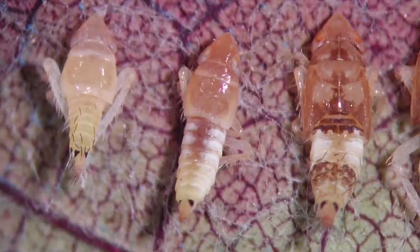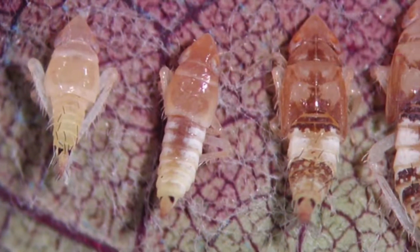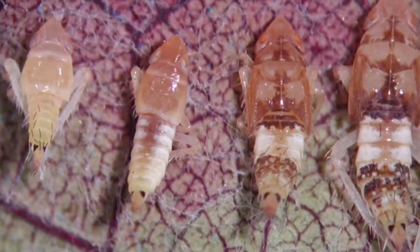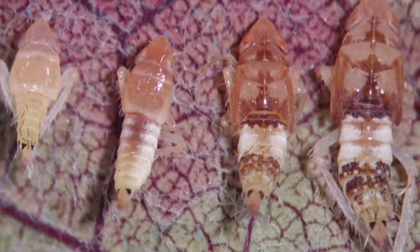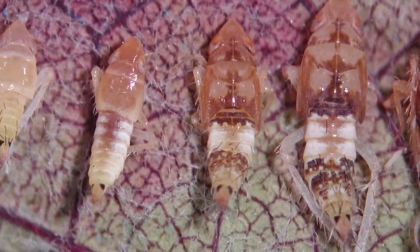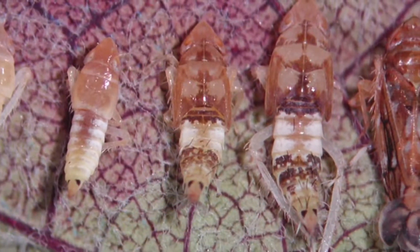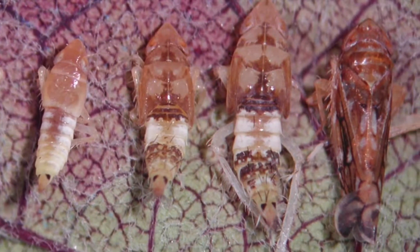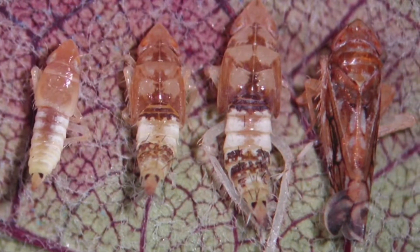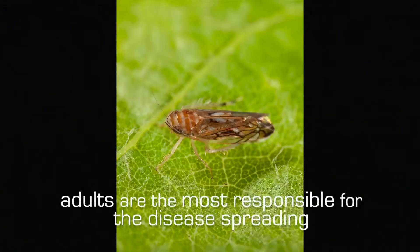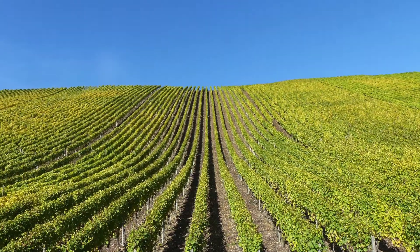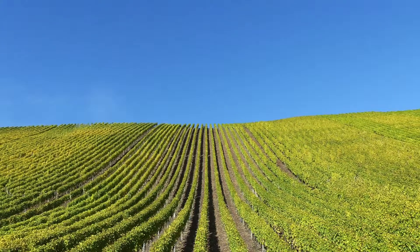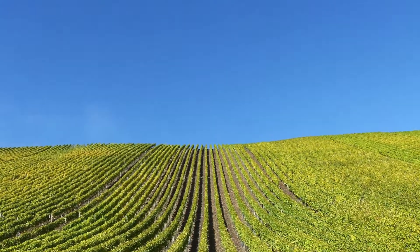The eggs do not hatch at the same time, so in the same vineyard you can sometimes find both adults and juvenile forms. You have to be careful about insecticide treatment timing. Adults are most responsible for disease spreading because, since they can fly, they are the form that moves the most in the vineyard.